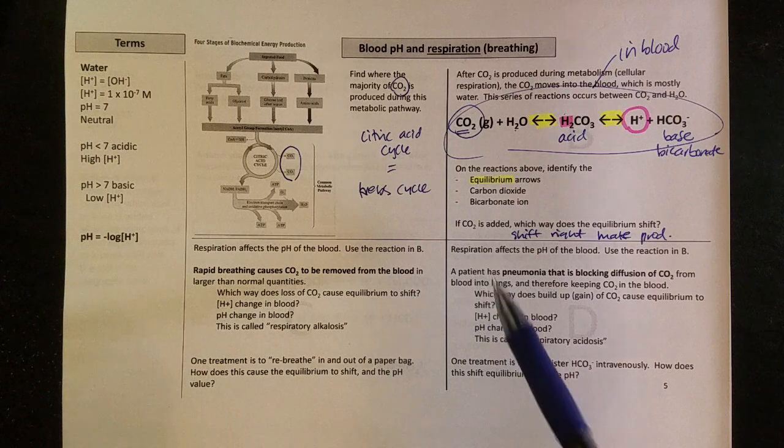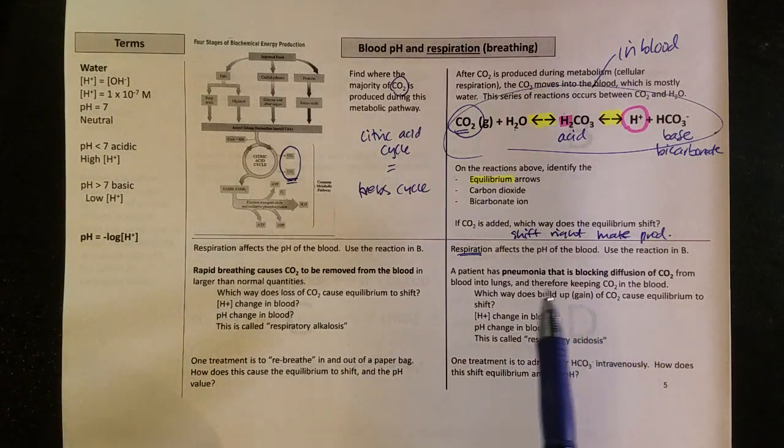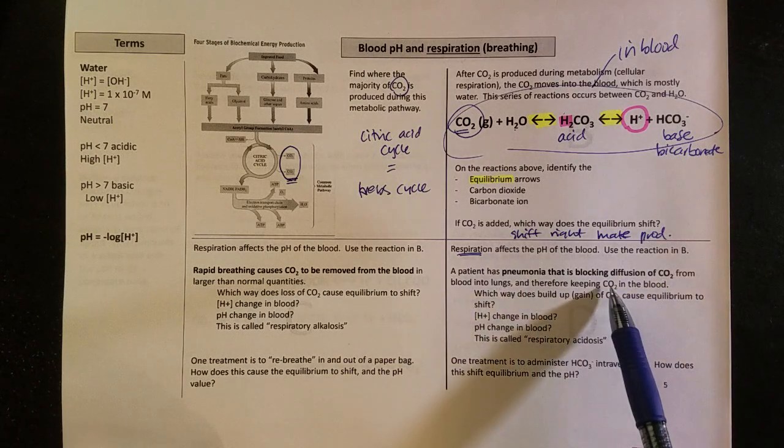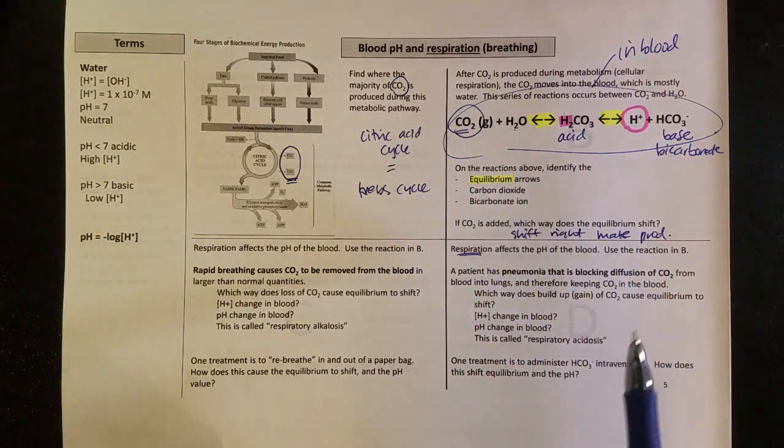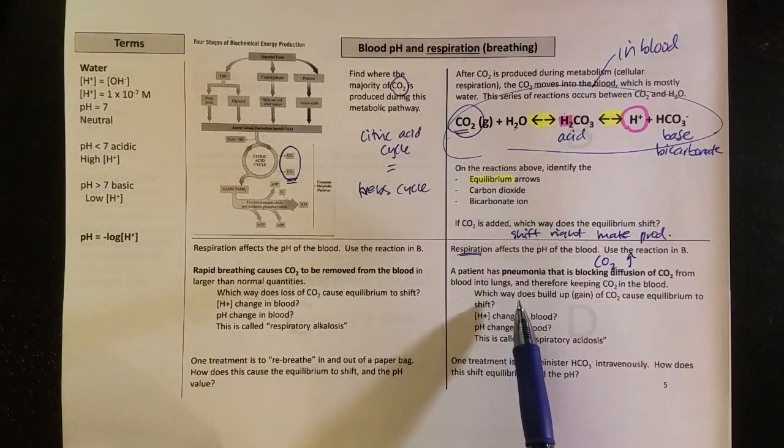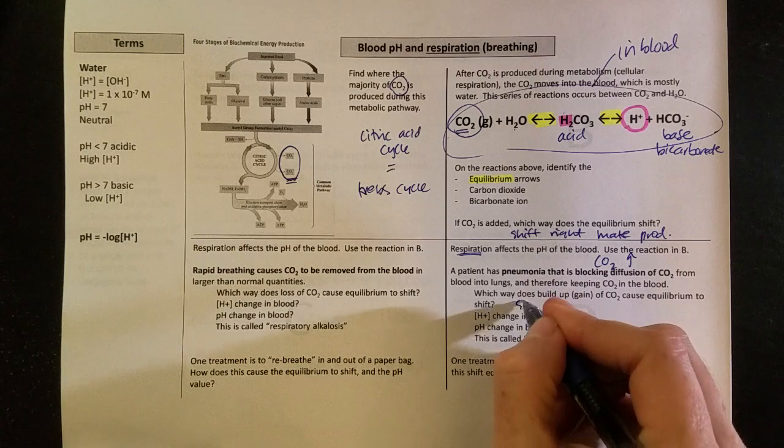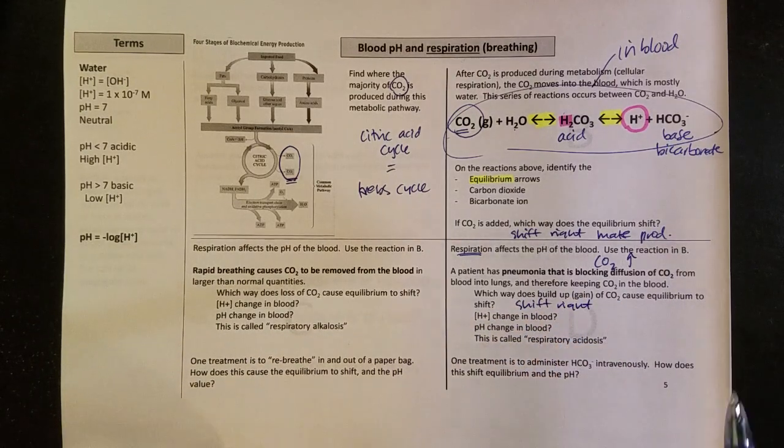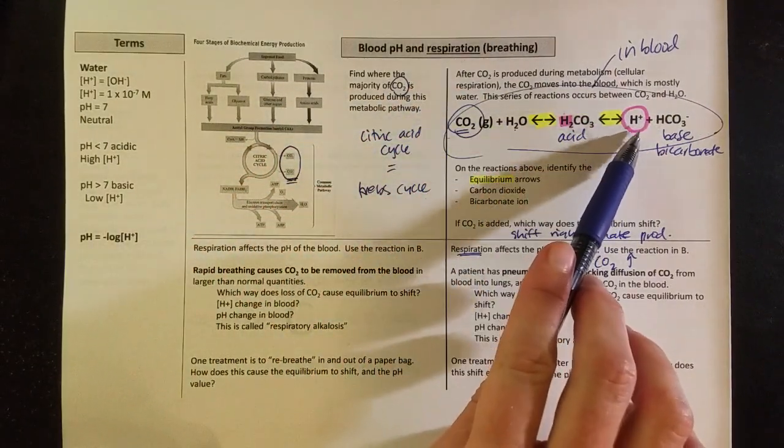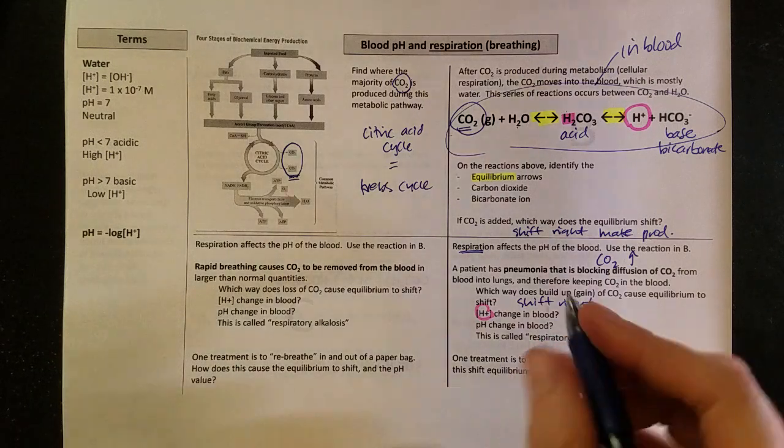So let's take a look at this application. Respiration is related to breathing, breathing being carbon dioxide and oxygen, two main gases. If a patient has pneumonia that is blocking the diffusion of CO2 from the blood into the lungs, then CO2 stays in the blood. My carbon dioxide in my blood starts to go up. So if carbon dioxide starts to go up, then which way does that buildup cause equilibrium to shift? If I have a lot of CO2, I'm going to shift to the right. Now I want to think about the implications of that. If I shift to the right, I'm going to shift all the way over here and start making more of this H+. So I want to focus on the H+, specifically the one that's circled there.